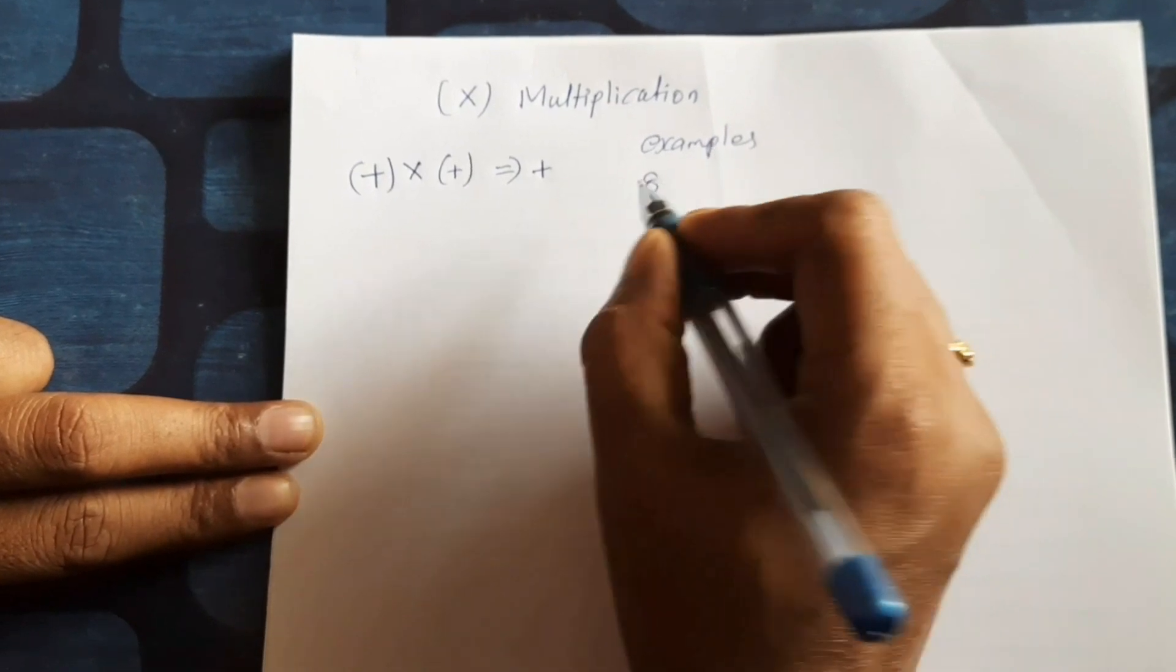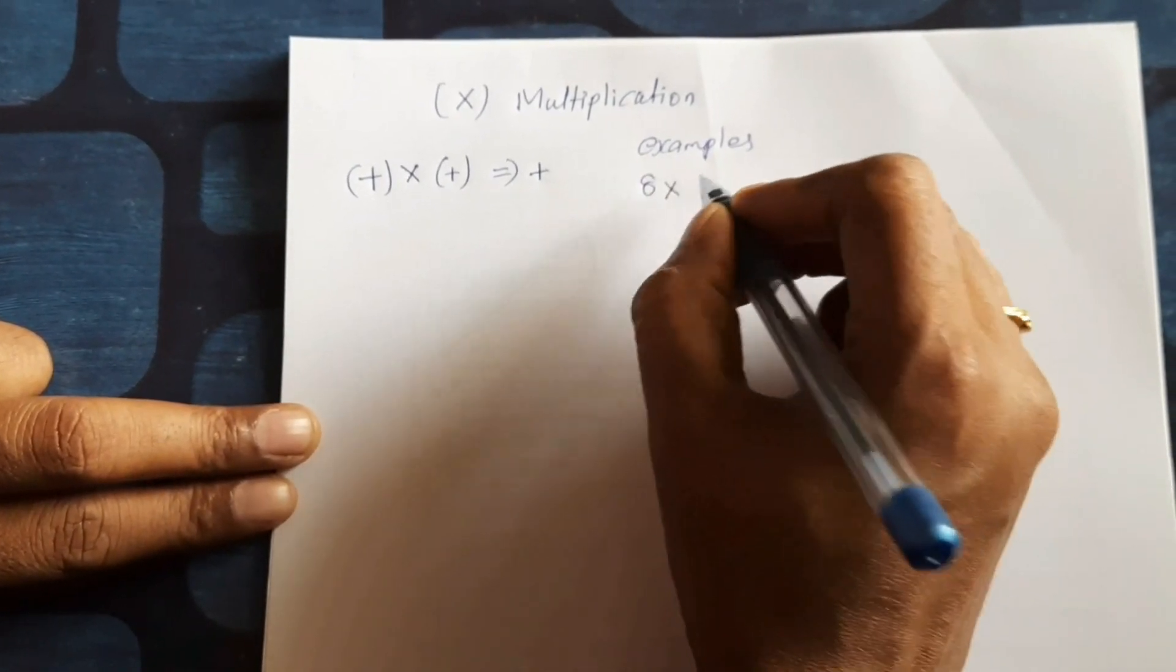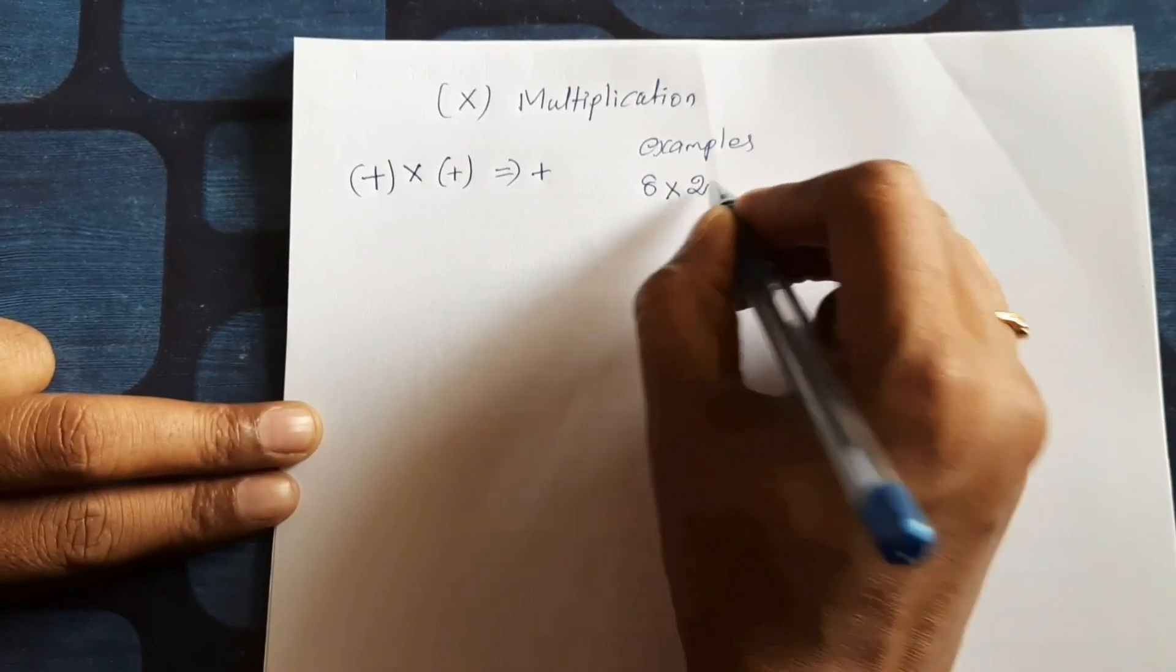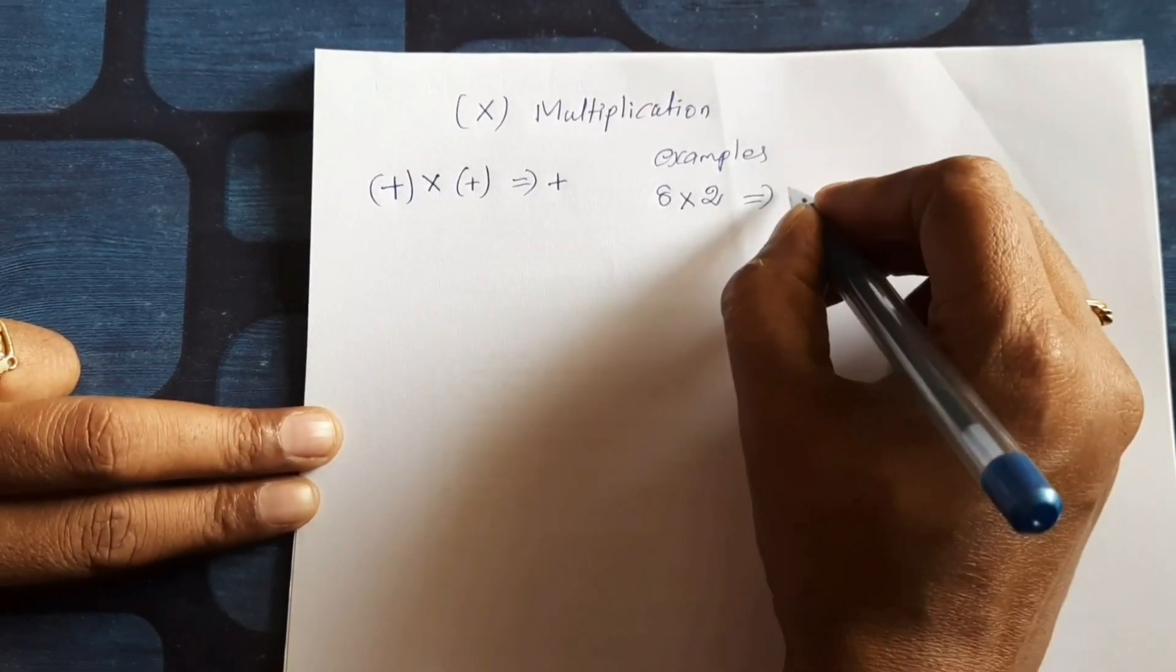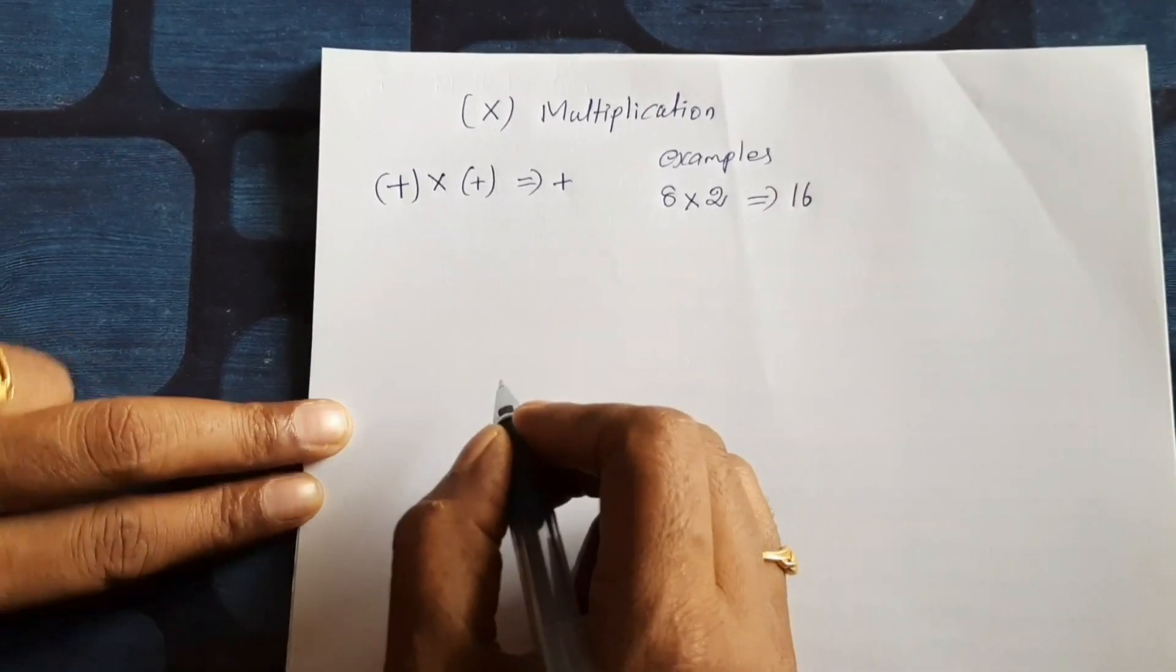Example: 8 plus 8 into plus 2 equal to 16 plus 16. Now minus into minus gives plus.